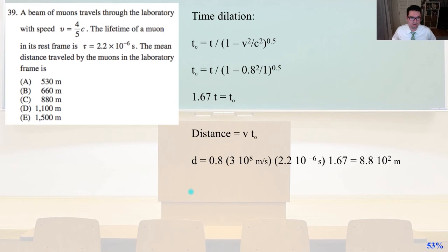So plug in our 4 fifths, which is 0.8, and we get 1.67 T equals T0. So the distance equals V times T0. So D equals, now plug everything in, D equals 0.8 times C, which is 3 times 10 to the 8 meters per second, the speed of light, times 2.2 times 10 to the minus 6 seconds, times 1.67, which is coming from our time dilation. And that equals 8.8 times 10 squared meters.